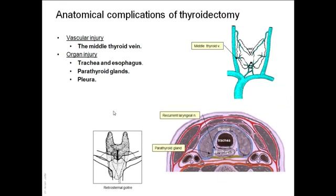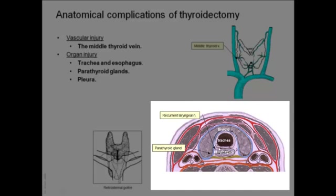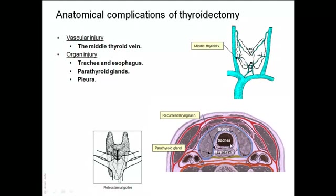Among the anatomical complications of thyroidectomy, we have vascular injury — particularly that affecting the middle thyroid vein, because this vein is short and wide. It should be ligated first during thyroidectomy to allow manipulation of the thyroid gland without injuring or tearing this short vessel. Organ injury, such as injury of the trachea or esophagus due to proximity, is particularly likely in cases of tumor affecting the thyroid gland.